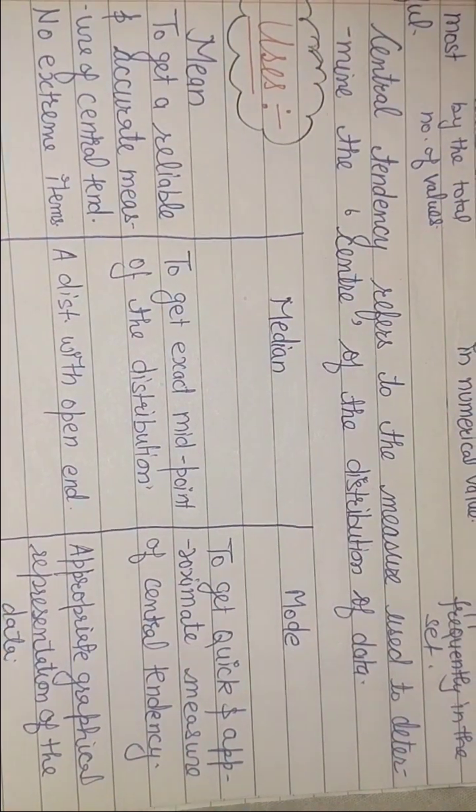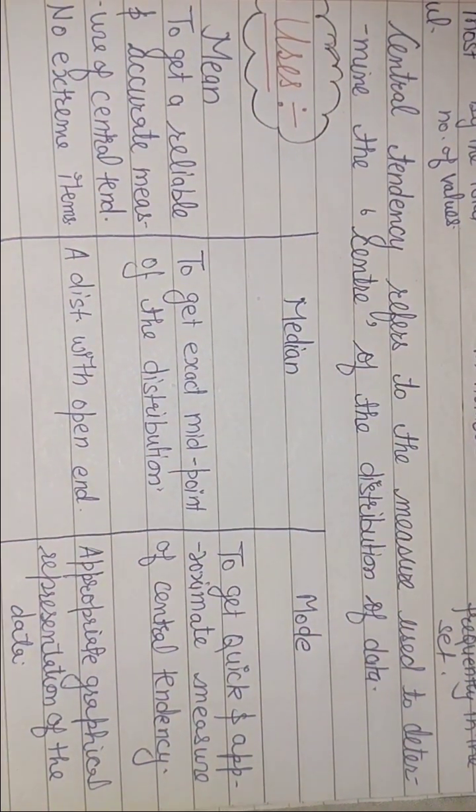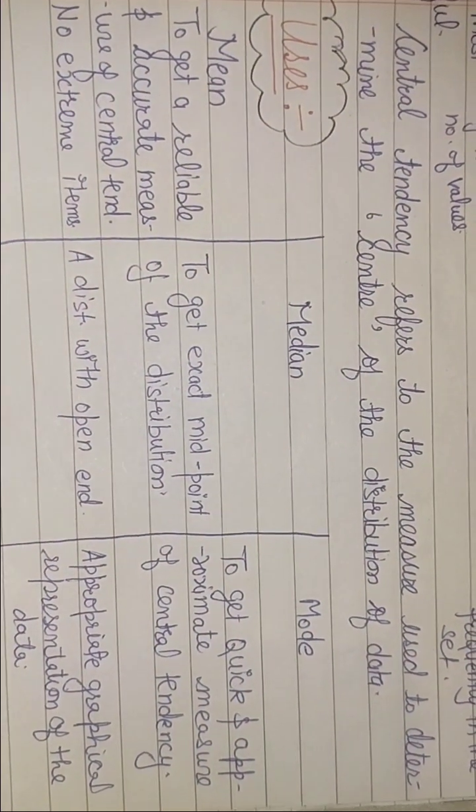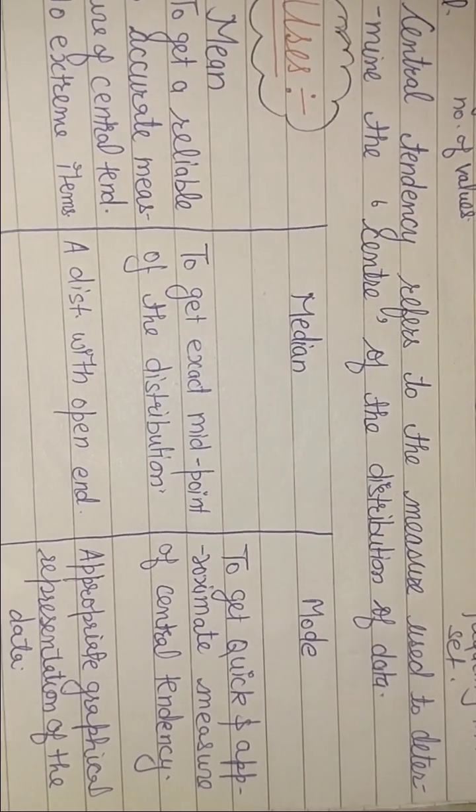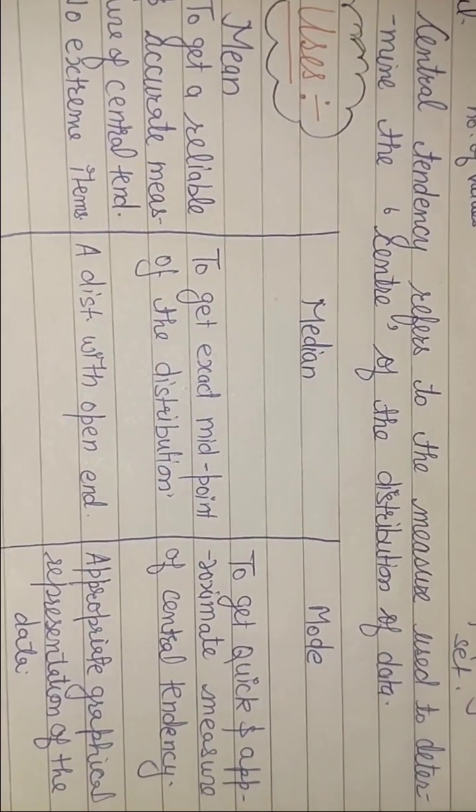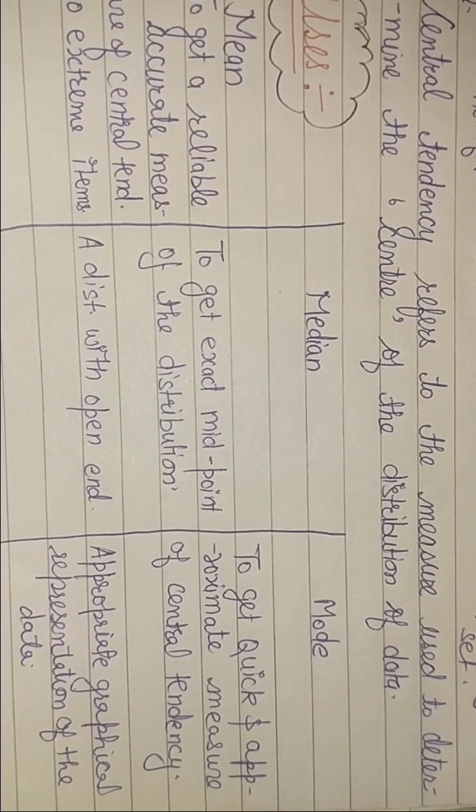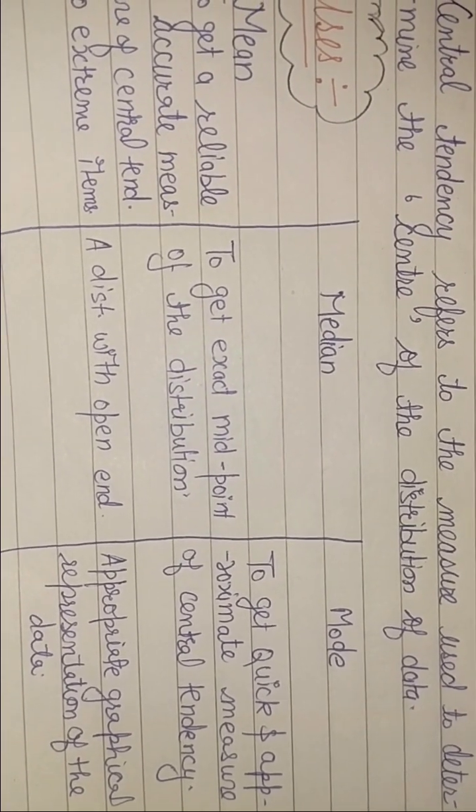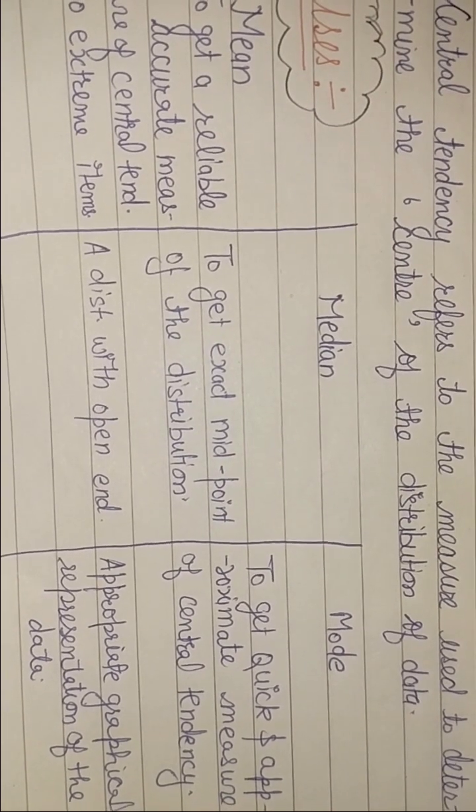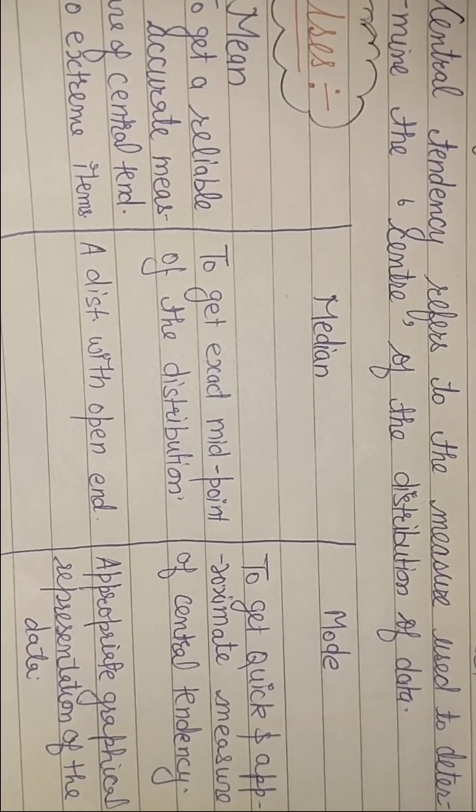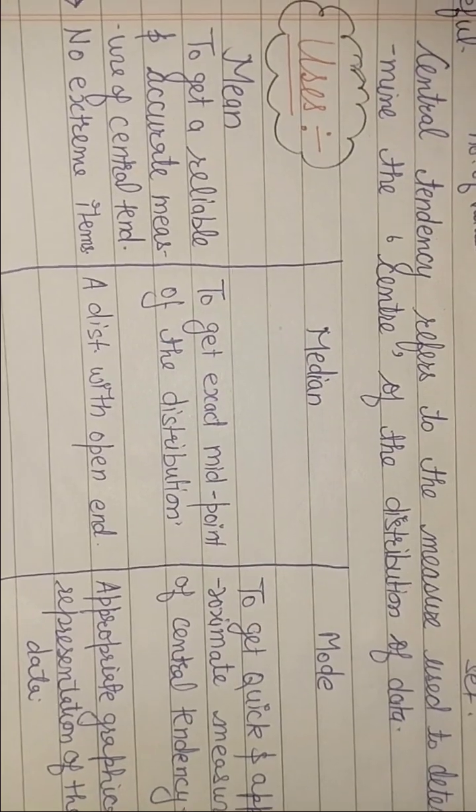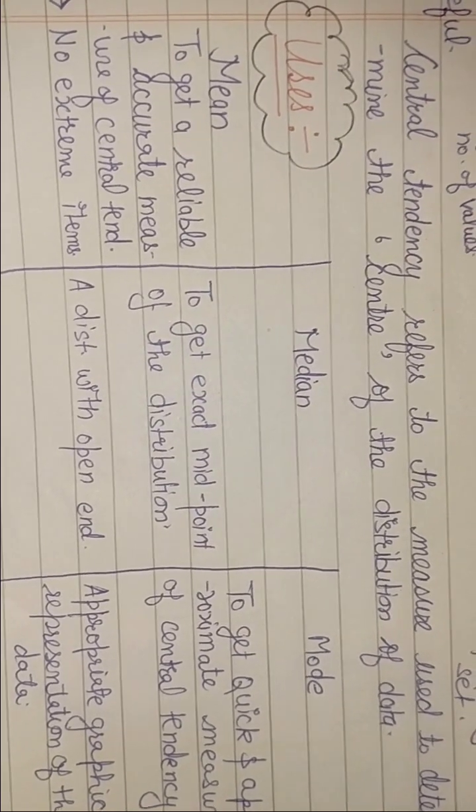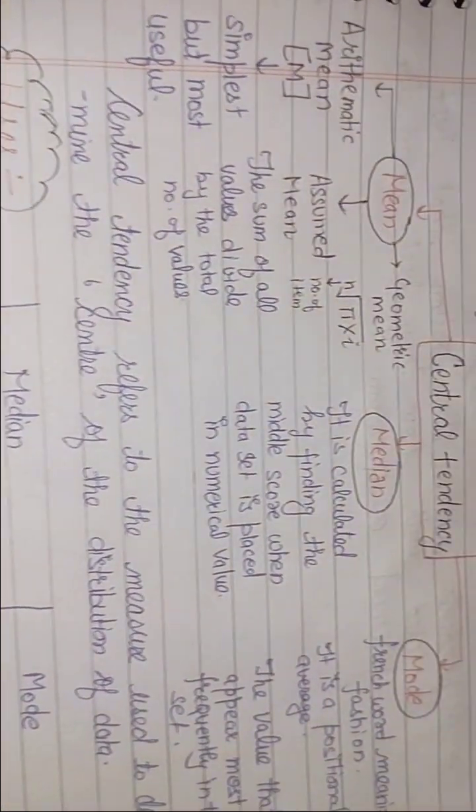Cumulative score kaun sa hai, jo distribution hai wo open-end type hai. Aur mode ke through hume quick result mil jata hai, kyunki hum na ginana hai, dekhna hai kaun si value zyada aa rahi hai, toh wo quick result de deta hai. Aur iske liye ek graphical representation hona chahiye - ki representation jo hai wo ek graphical manner mein honi chahiye. Ye bhi ek tarah se open-ended hi hai median ki tarah, but mean ek open-ended nahi hai.